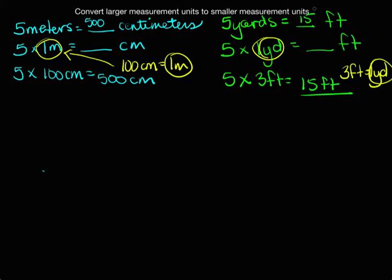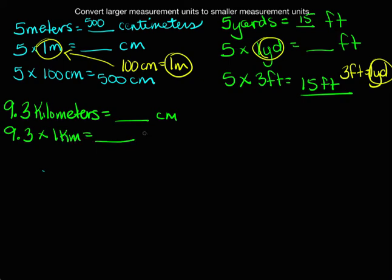Well, let's get a little bit more difficult. How about if we go 9 and 3 tenths kilometers. And we're going to convert this one now into centimeters. Same process, 9 and 3 tenths times 1 kilometer. I'm trying to figure out how many centimeters.